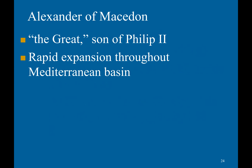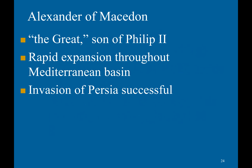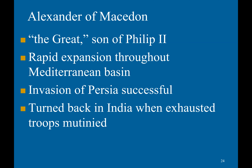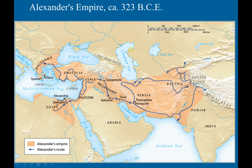Alexander went on a military rampage throughout the Mediterranean basin, rapidly expanding his empire. He successfully toppled the Persian Empire — a very powerful society. He was only turned back in India when his exhausted troops mutinied. His route went from Macedonia through Anatolia, with a detour into Egypt, then Syria, conquering the Persian Empire and continuing eastward. Alexander supposedly died of a fever in Babylon.